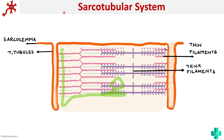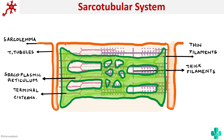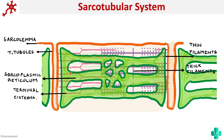These invaginations are called the T-tubules or transverse tubules. Another membranous structure visible here is the sarcoplasmic reticulum — just like the endoplasmic reticulum, we have sarcoplasmic reticulum with a similar function. The ends of the sarcoplasmic reticulum are dilated and these form the terminal cisternae. So the dilated ends of the sarcoplasmic reticulum are called terminal cisternae.